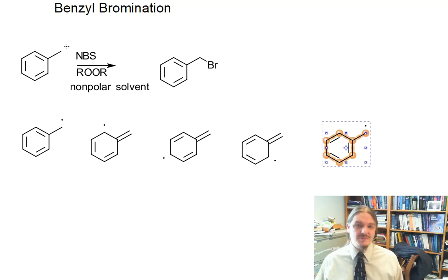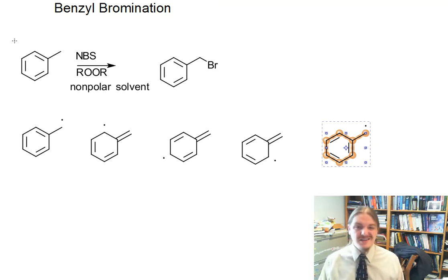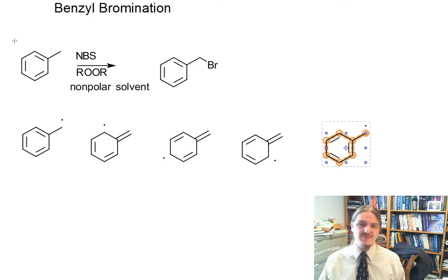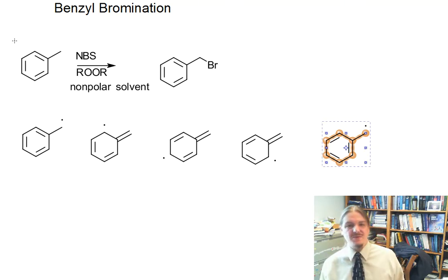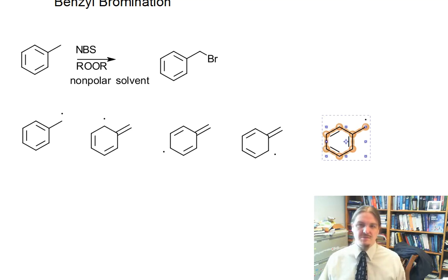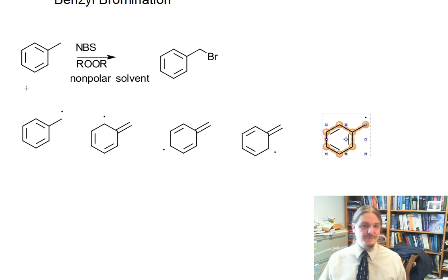In general, NBS is a good reagent to use for resonance-stabilized radicals. It can brominate other positions, but it's really pretty specific for this. It's because molecules like benzene — the aromatic compounds — and the alkenes also have other reactions that they do with bromine, and you want to avoid bromine.